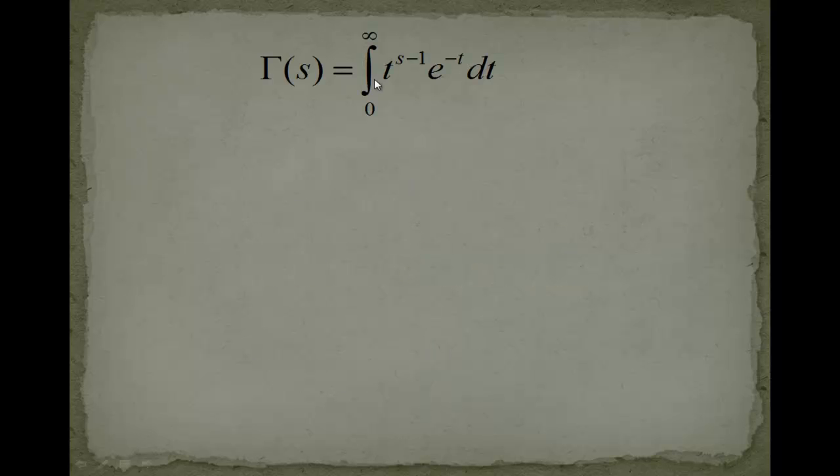Let's start with the definition of the gamma function. We have the gamma function from 0 to infinity: t to the s minus 1, e to the minus t, dt. Very important: this representation only converges for s, or better, the real part of s being positive.